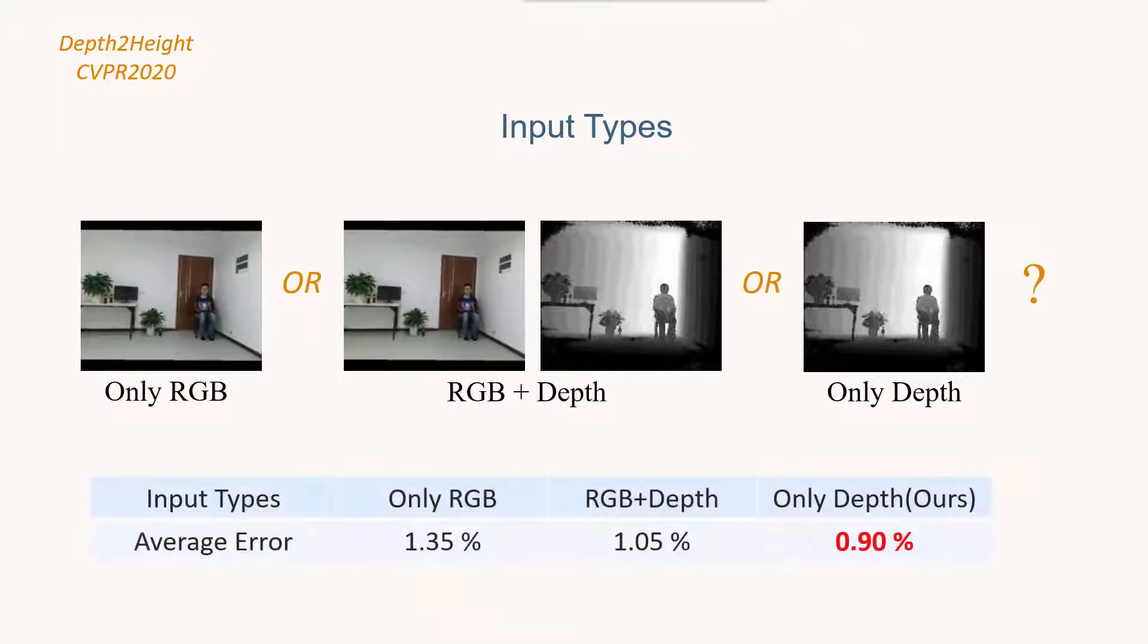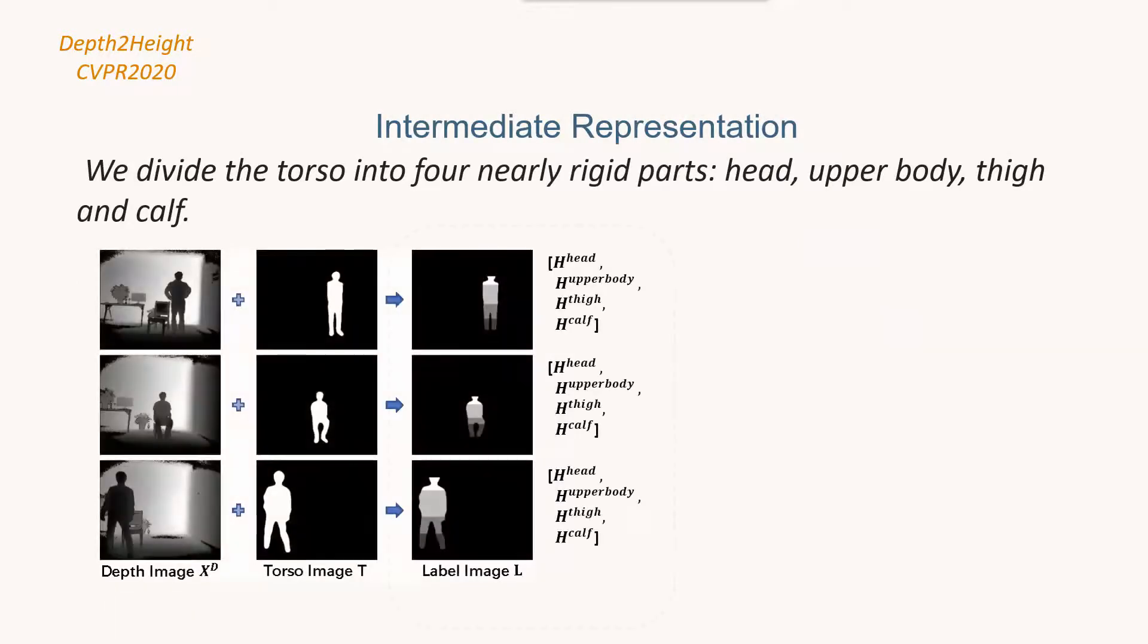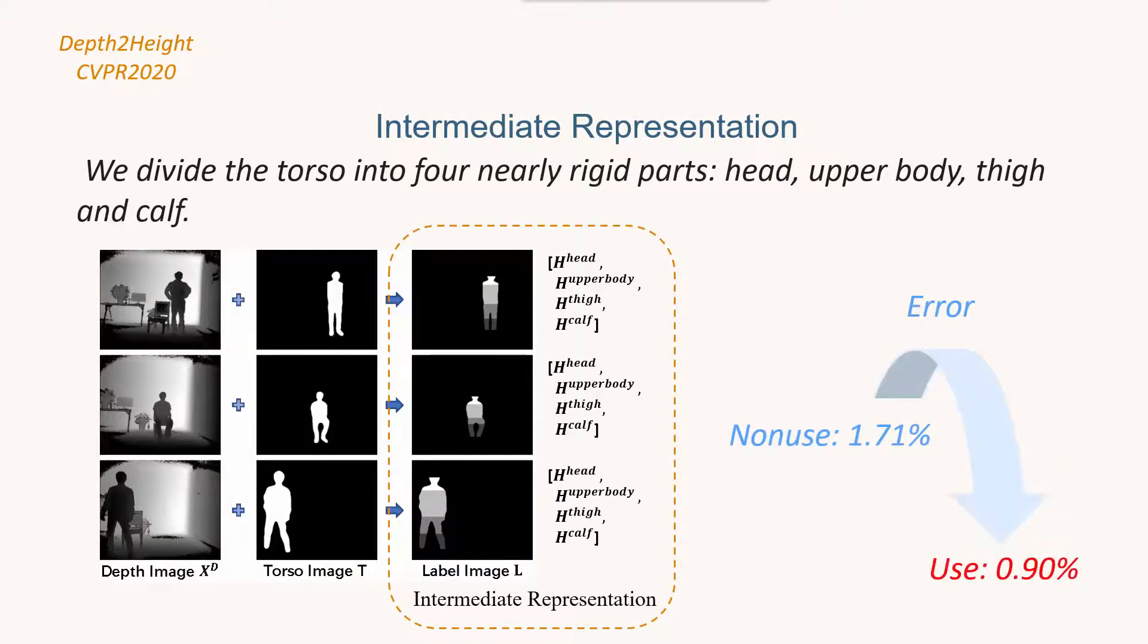We prove that using a single depth image is more accurate than using depth and RGB and verify how the intermediate representation can make it easier and more efficient for the network to estimate.